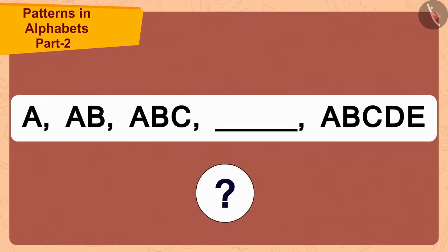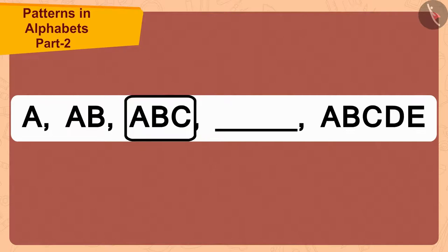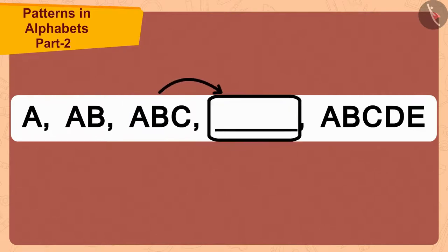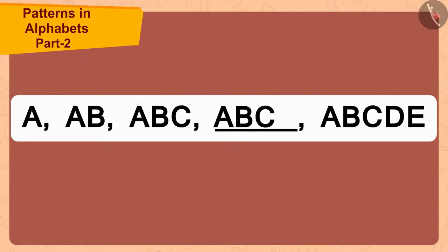Now, what will be the letters that come in the blank space? Repeating A, B, C will add the next letter D to it. In this way, the letters in the blank space will be A, B, C, D.